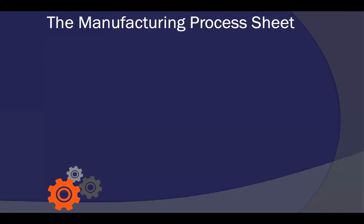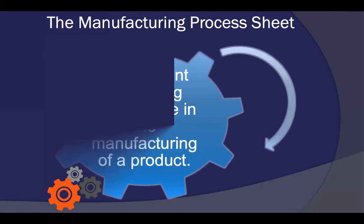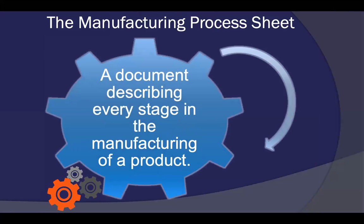We spoke about the manufacturing process sheet. The manufacturing process sheet is a document describing every stage in the manufacturing of a product. You can read about it in depth on page 385.